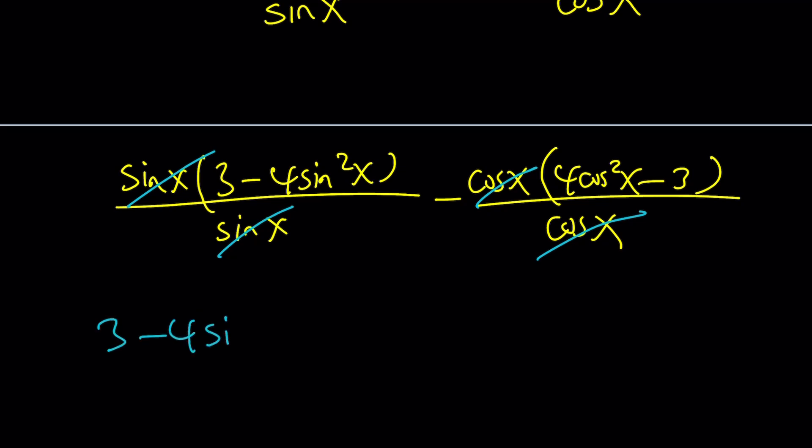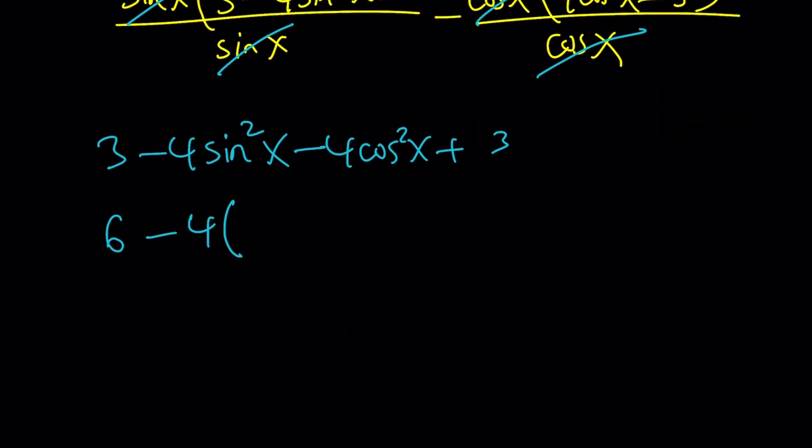That's divided by cosine x. Cosine x and sine x cancel out, right? And we end up with something nicer. Let's find out what that looks like. 3 minus 4 sine squared x minus, I'm supposed to distribute the negative, 4 cosine squared x and then plus 3. Okay, 3 plus 3 is what? 6, right? Okay, and then now we can factor out a negative 4 and that gives us sine squared x plus cosine squared x. And guess what?